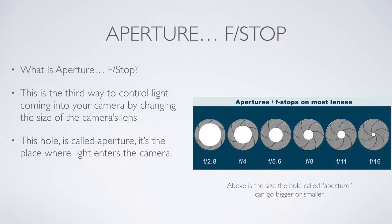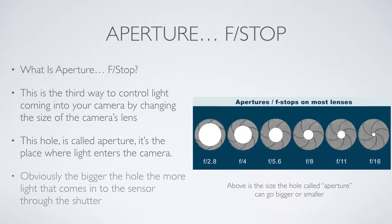We have our lens, the light goes into the lens and hits the sensor through our shutter, and how much light is allowed in is determined by the aperture — which is the size of that hole made by the shutter.